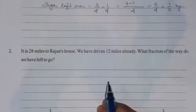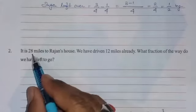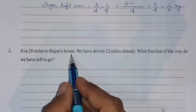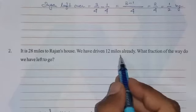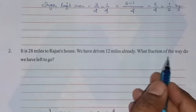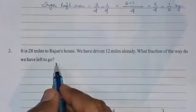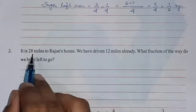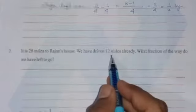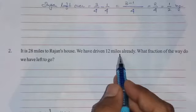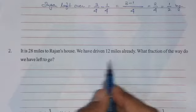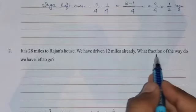See the next question, number 2. The question is: it is 28 miles to Rajan's house. We have driven 12 miles already. What fraction of the way do we have left to go? So total distance to Rajan's house is 28 miles, and we have driven 12 miles. Now what distance do we have to cover?